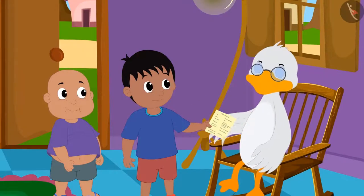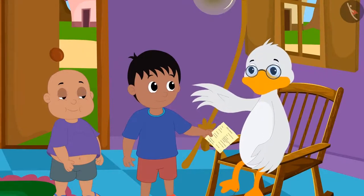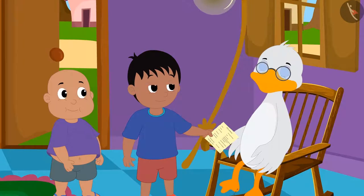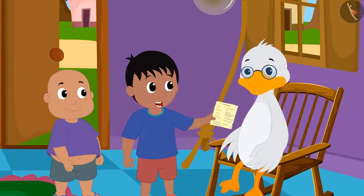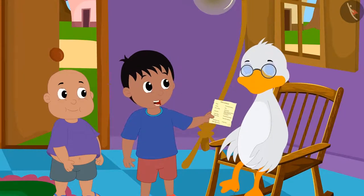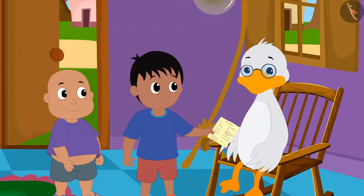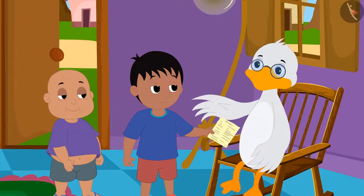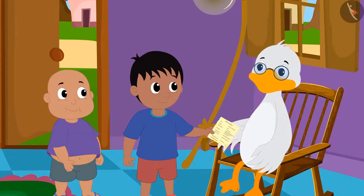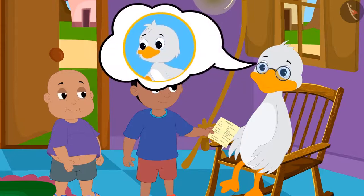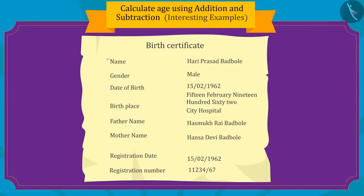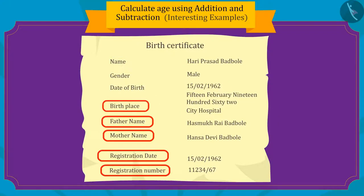The Uncle told them that it is his birth certificate. Uncle explains that a birth certificate is issued at the time of every person's birth. Important information is written on it, such as the person's name, date of birth, etc.